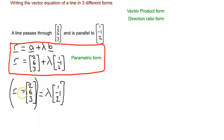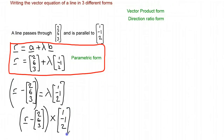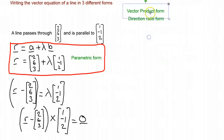And because they are parallel to each other, I know that the cross product of these two has got to be equal to zero. So I am now going to rewrite this as (r minus a) cross b equals zero. So that direction vector crossed with the direction vector b, because they are parallel to each other, has to be equal to zero. And now we have that in the vector product form.